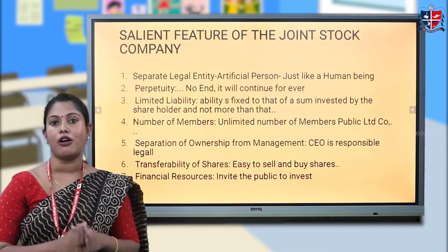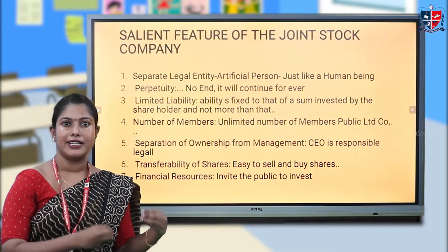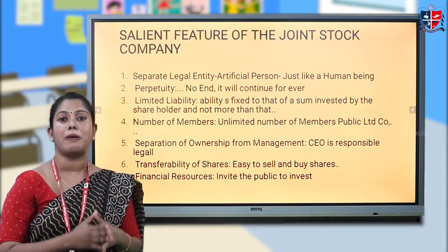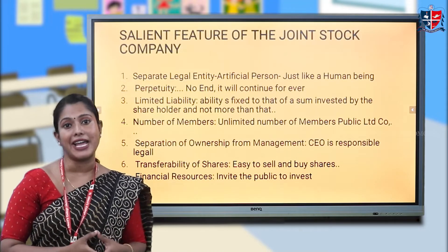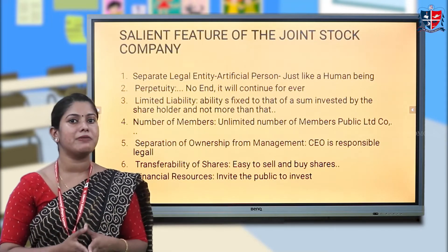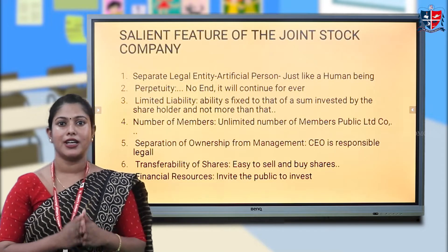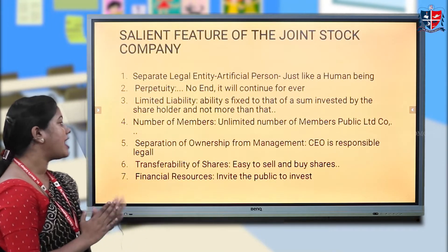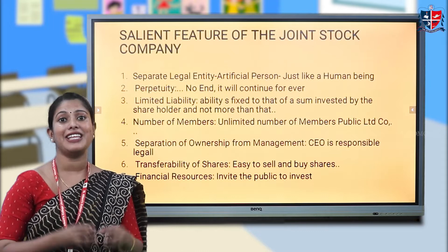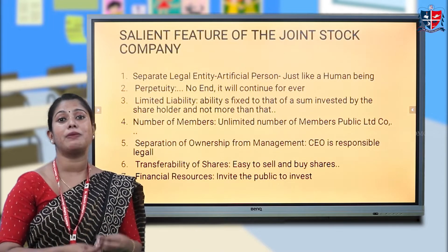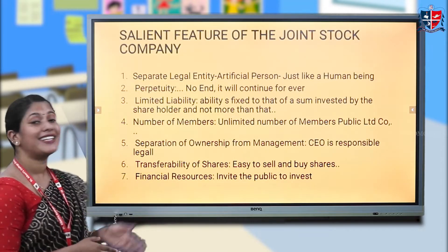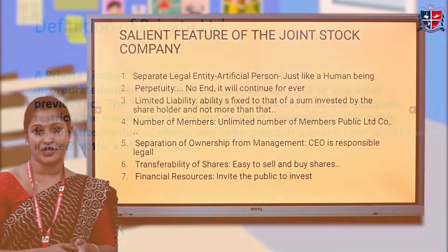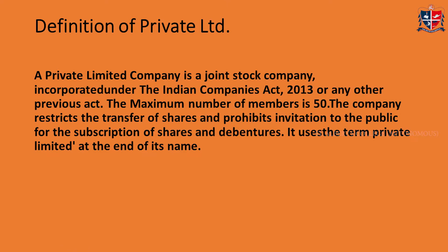Next is transferability of shares. In the case of a public limited company, shares can be easily transferred — they can be easily bought and sold. But in the case of a private limited company, there are some restrictions. Regarding financial resources, in the case of a public limited company, the company can invite investment from the public. These are the salient features of a joint stock company.